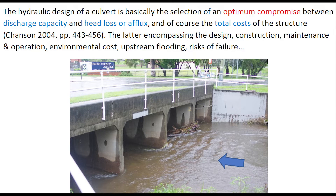The hydraulic design of a culvert is basically the selection of an optimum compromise between discharge capacity and head loss, or afflux, on the total cost of the structure. The latter encompasses the design, construction, maintenance, operation, and removal cost, cost of upstream flooding, and risk of failure.